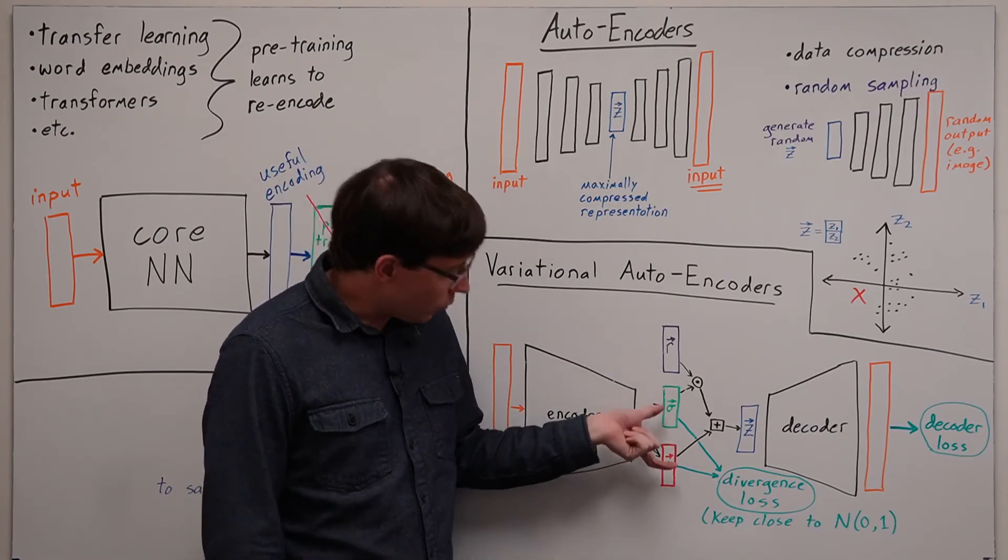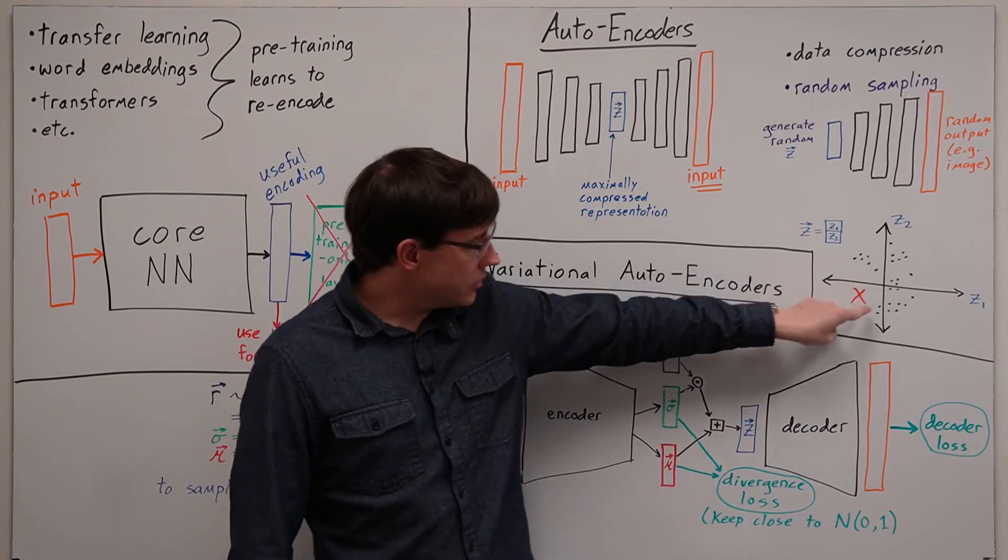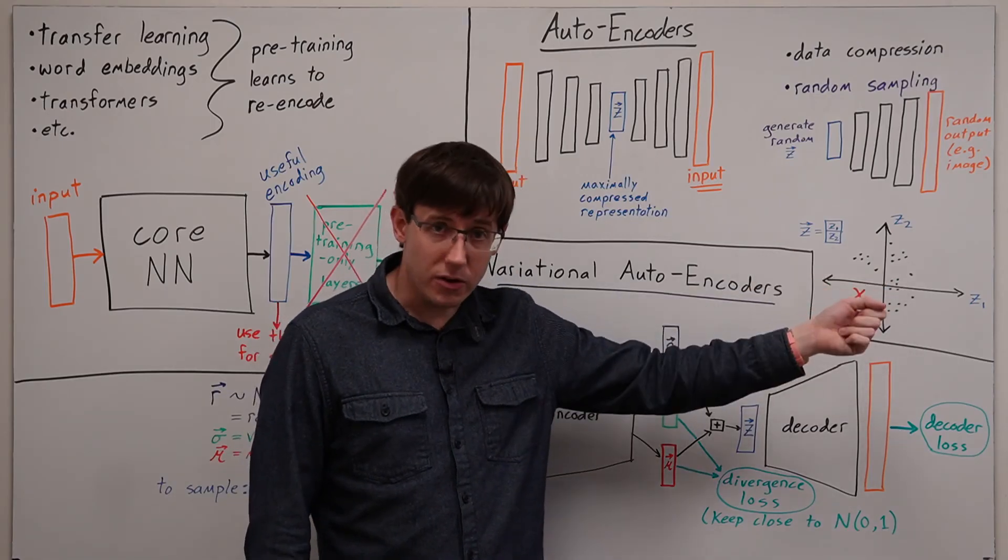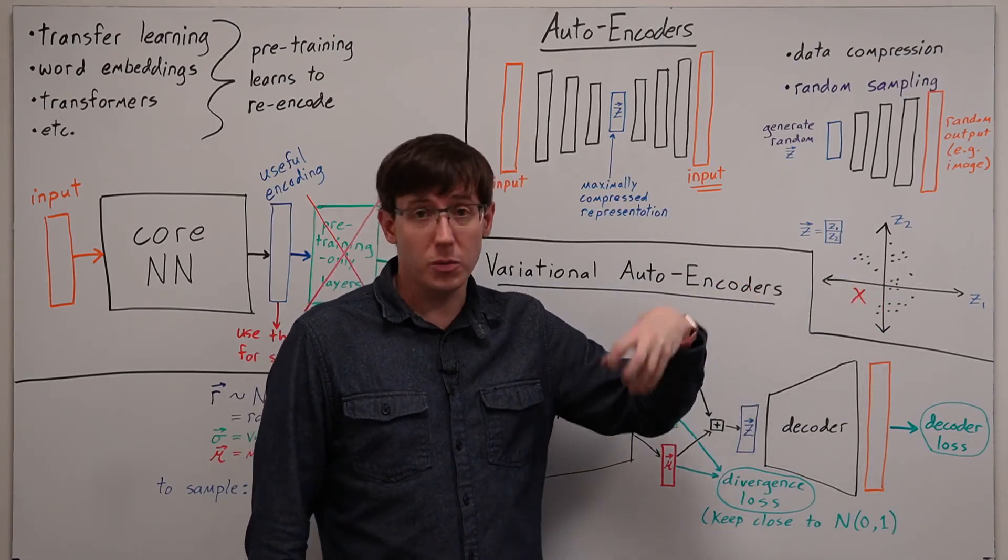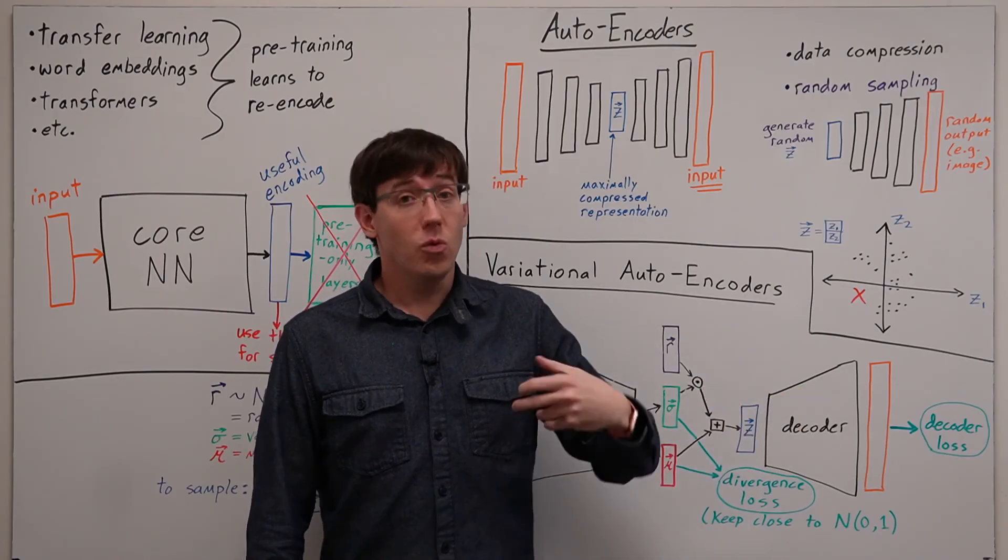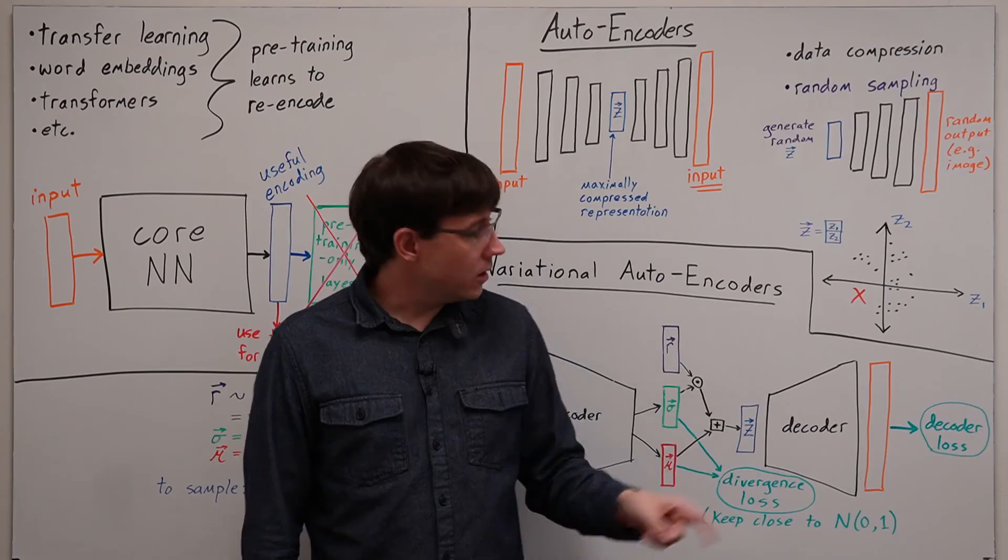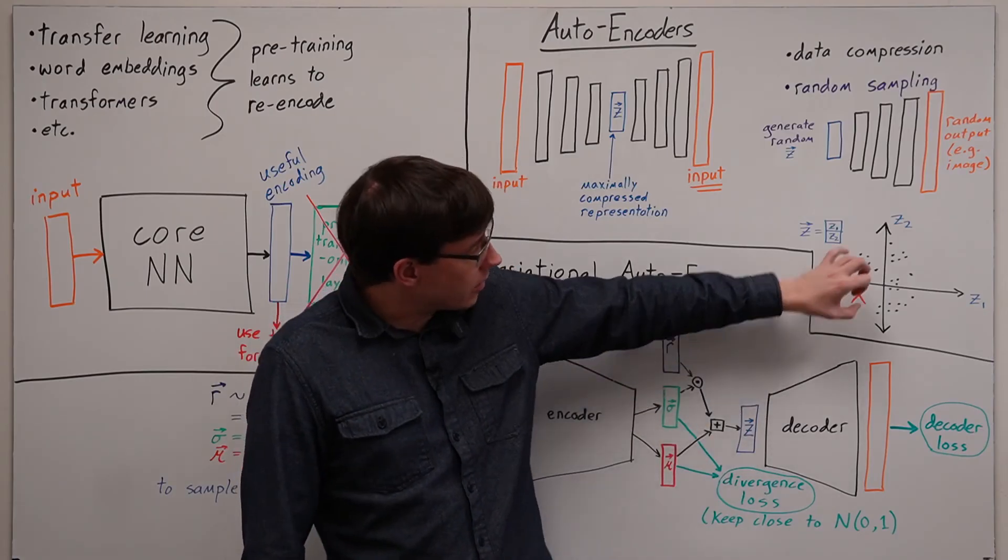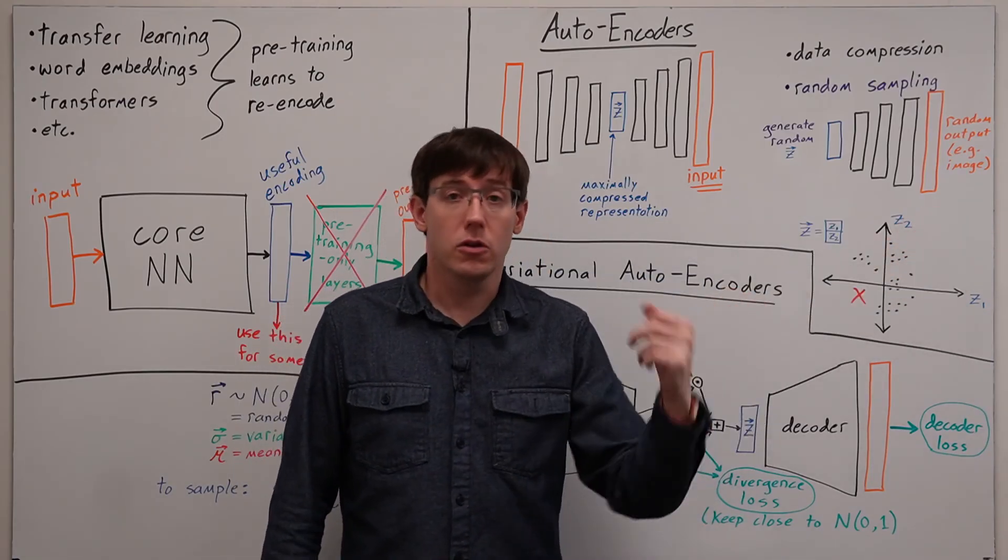Which means that we will get representations that are clustered around the center of the space of possible representations. And so later, if we randomly sample, we are unlikely to get things that are far away from the learned distribution.